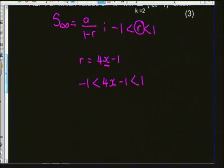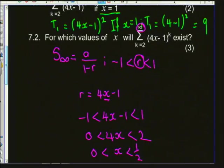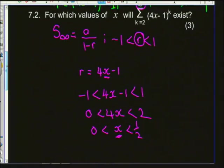Adding 1 throughout: 0 < 4x < 2. Dividing by 4: 0 < x < 1/2. So the sum to infinity will only exist if x is between 0 and 1/2. That's three marks for question 7.2.